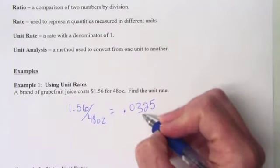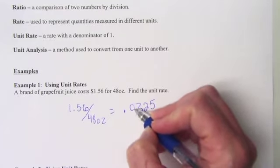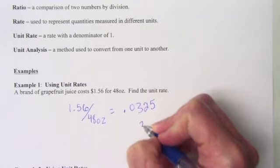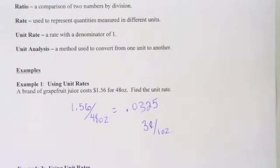So if we want to round it to the nearest hundredths, it's .03. We need to look at the two, that tells us we leave it at three cents. So what we get for a unit rate is three cents per one ounce. And now that is a unit rate because the denominator is now one. So basically, you just divide when you need to find a unit rate.